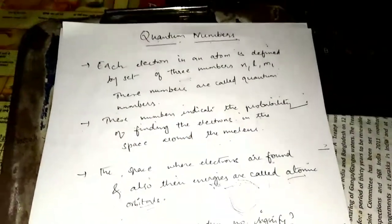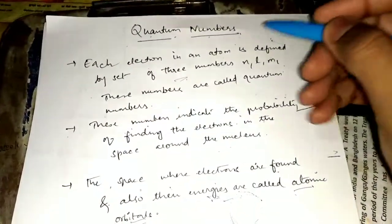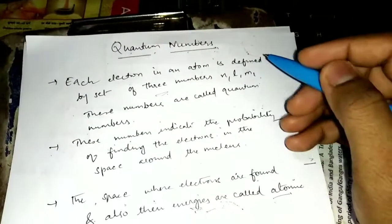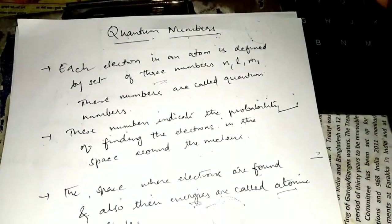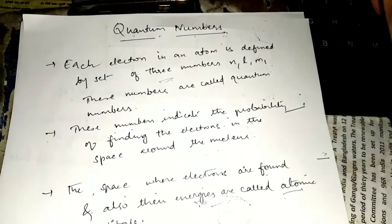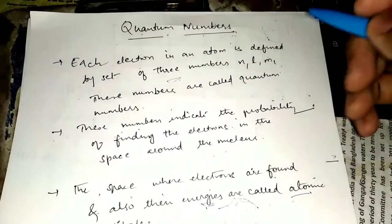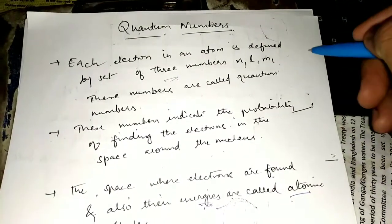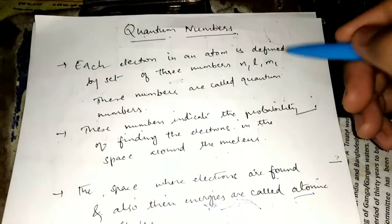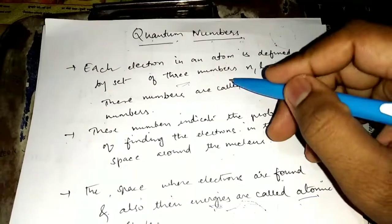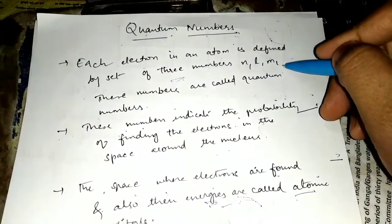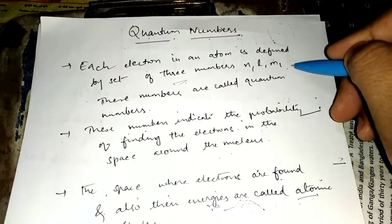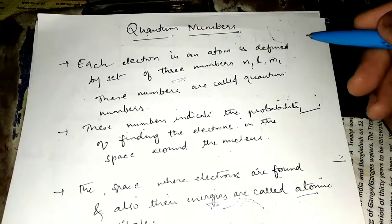Hello friends. Today I have come up with a new topic here: quantum numbers. Each electron has its own set of quantum numbers and its own energy levels. The finding of the electron in space is also given by these values. The values are given by N, L, and ML. There are actually 4 quantum numbers; I will tell you the fourth one at a later stage.